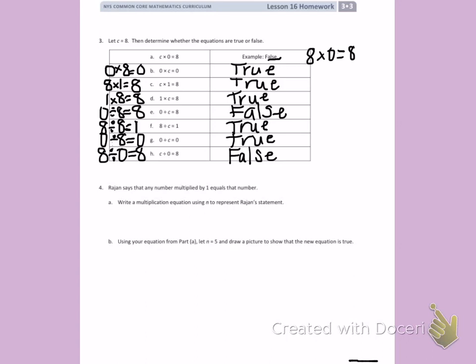Number 4. Rayjean says that any number multiplied by 1 equals that number. Write a multiplication equation using n to represent Rayjean's statement. So Rayjean says any number, which is n, multiplied by 1 equals that same number.